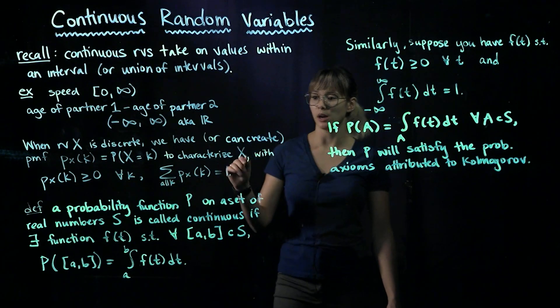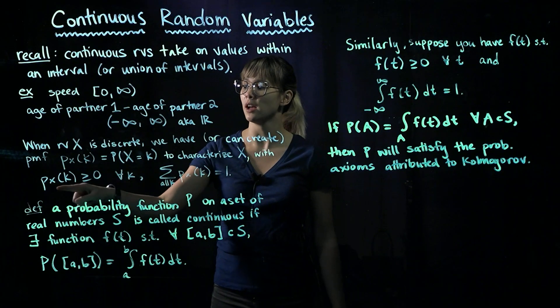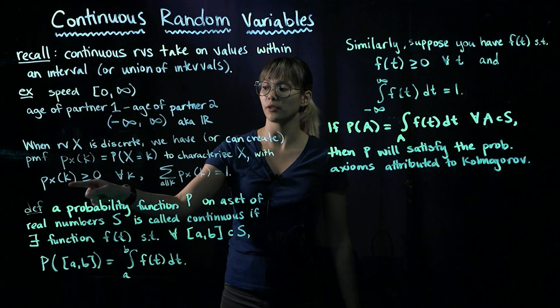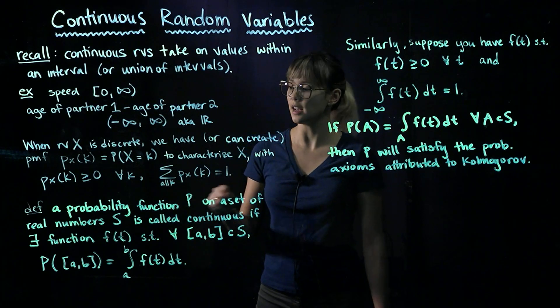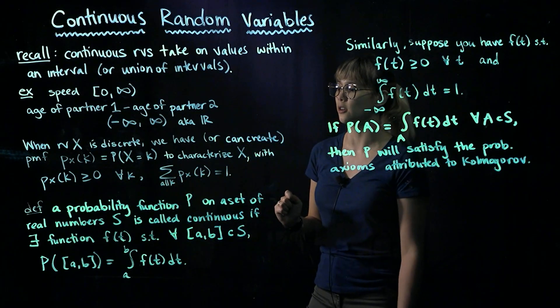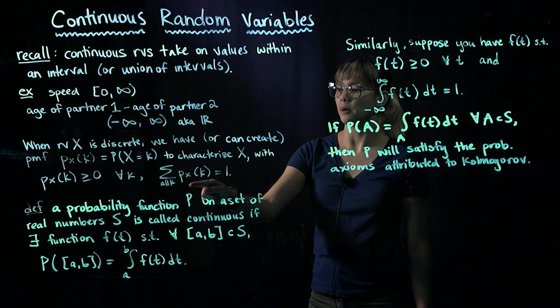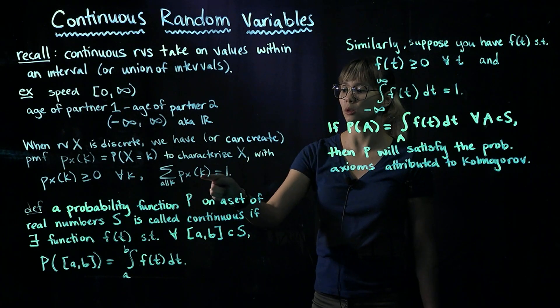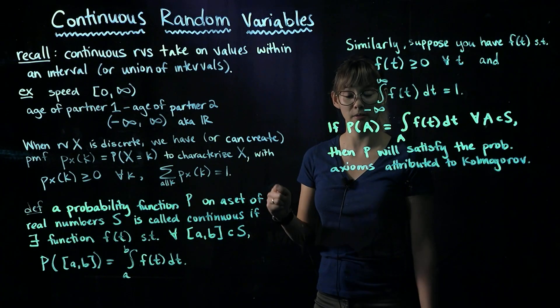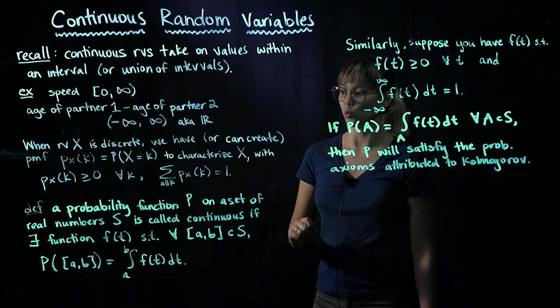Remember a couple qualities about this PMF. It's always greater than or equal to zero. So for every single value that X takes on, it's going to be greater than or equal to zero. And if we sum up all the values of our PMF, so plugging in each value that our random variable could take on, sum it all up, that equals one.